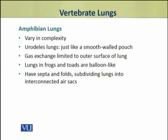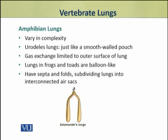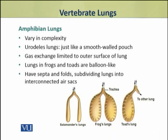Dear students, we shall now discuss the lungs of all four classes of vertebrates one by one, starting with amphibian lungs. The lungs of amphibia vary in complexity among different groups. In urodeles such as salamanders, the lungs are just like a smooth-walled pouch — bag-like with only air sacs on the wall for gas exchange. In frogs and toads, the lungs are balloon-like and contain septa and folds that subdivide them into interconnected air sacs, enabling comparatively better gas exchange.